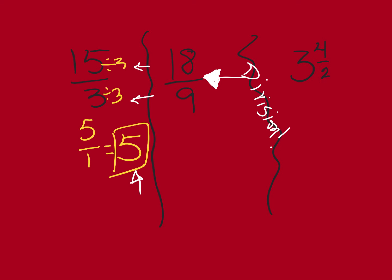You may have noticed that fraction bars are the same as division. So eighteen-ninths can be thought of as eighteen divided by nine, which equals two. Or reducing it: nine is the gazinta they share, so eighteen divided by nine is two and nine divided by nine is one — two over one equals two. Either way, you get the same answer.